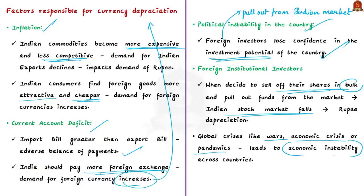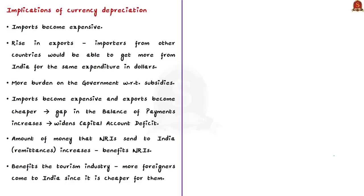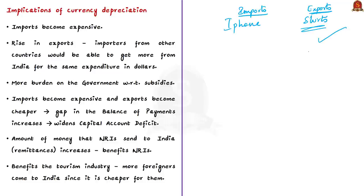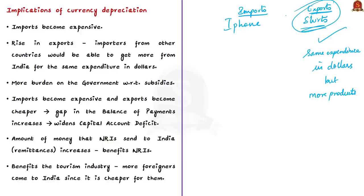Now, what are the impacts of currency depreciation? The first impact is that currency depreciation can help countries improve their trade balance. For example, a fall in rupee makes imports more expensive for Indians — they pay more in rupee terms for an unchanged dollar price of imports like iPhones. Conversely, an American retailer importing shirts from India can get more shirts for the same dollar expenditure, increasing orders from India. This leads to a rise in demand for Indian products and a rise in Indian exports, benefiting exporters.